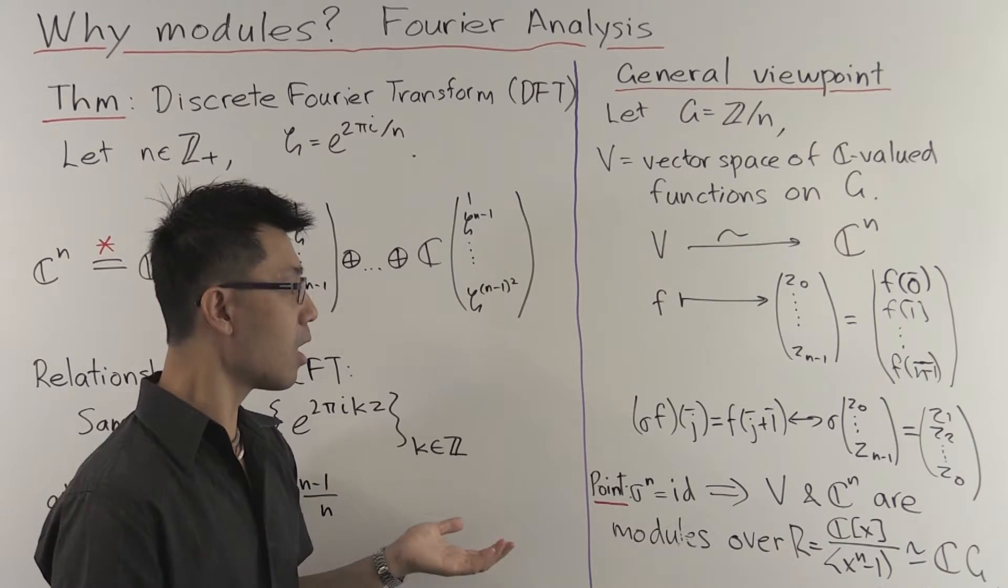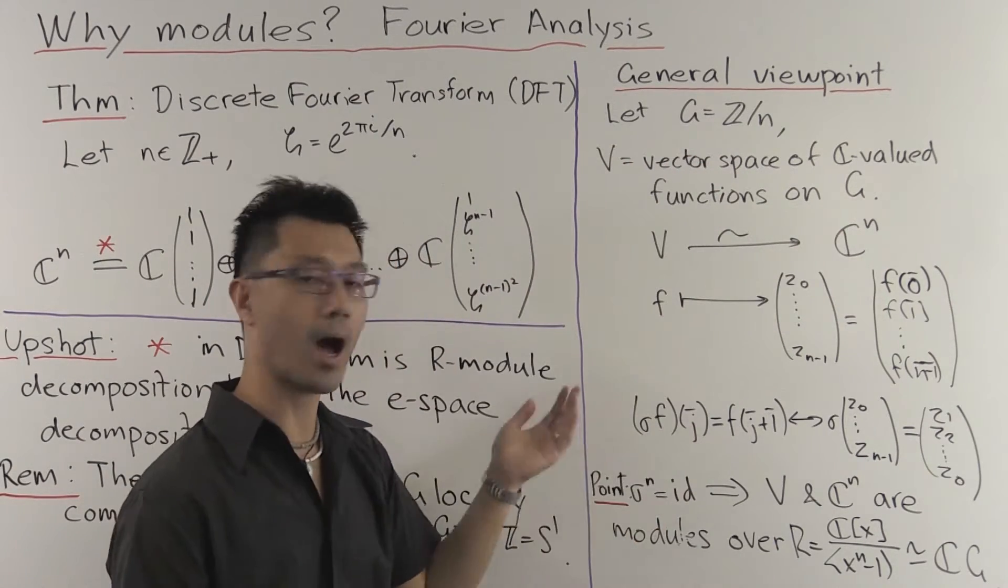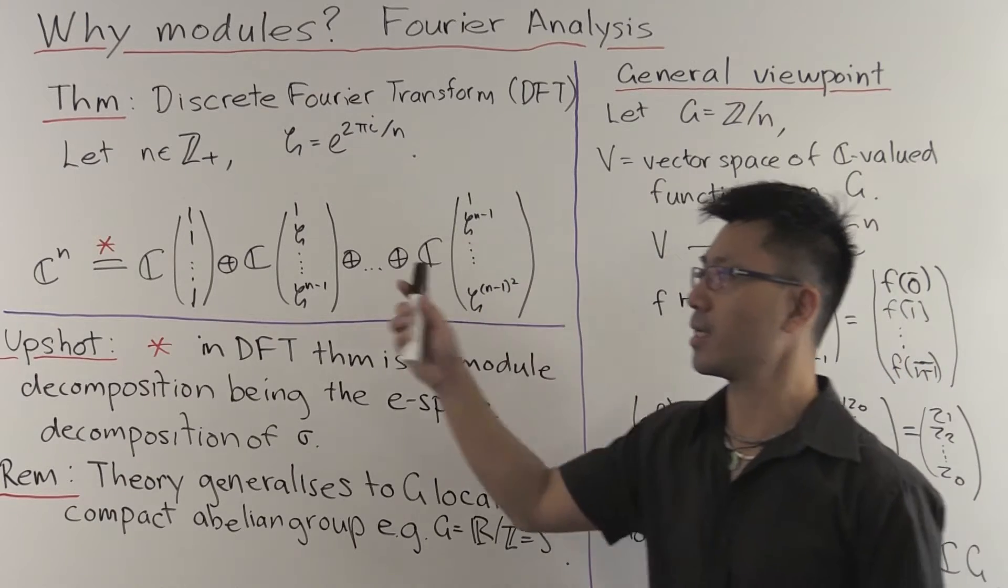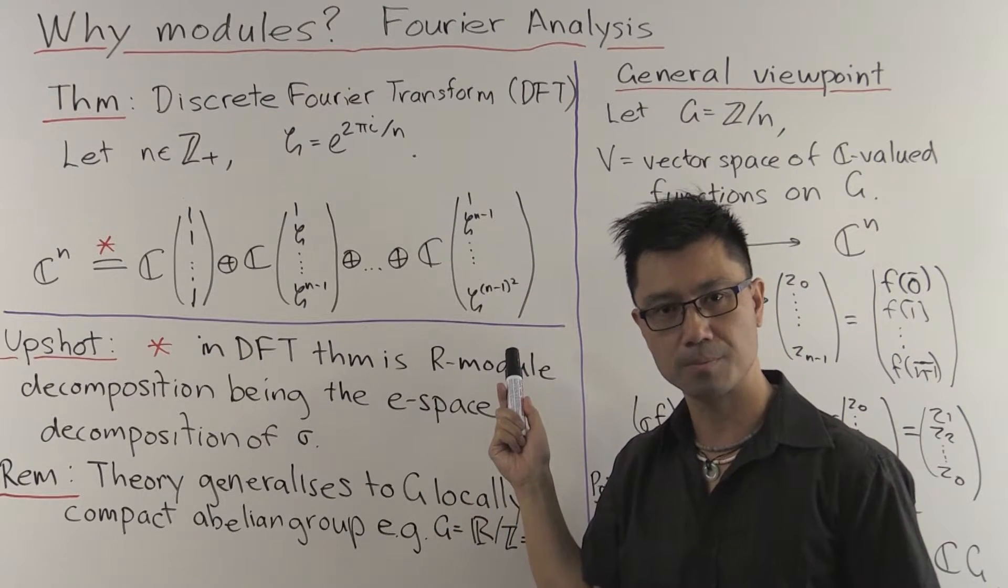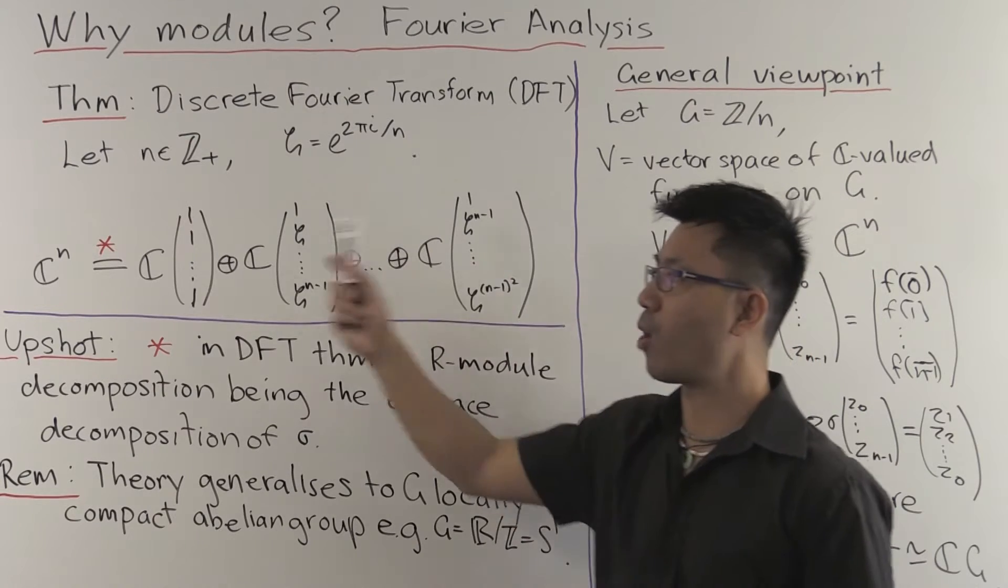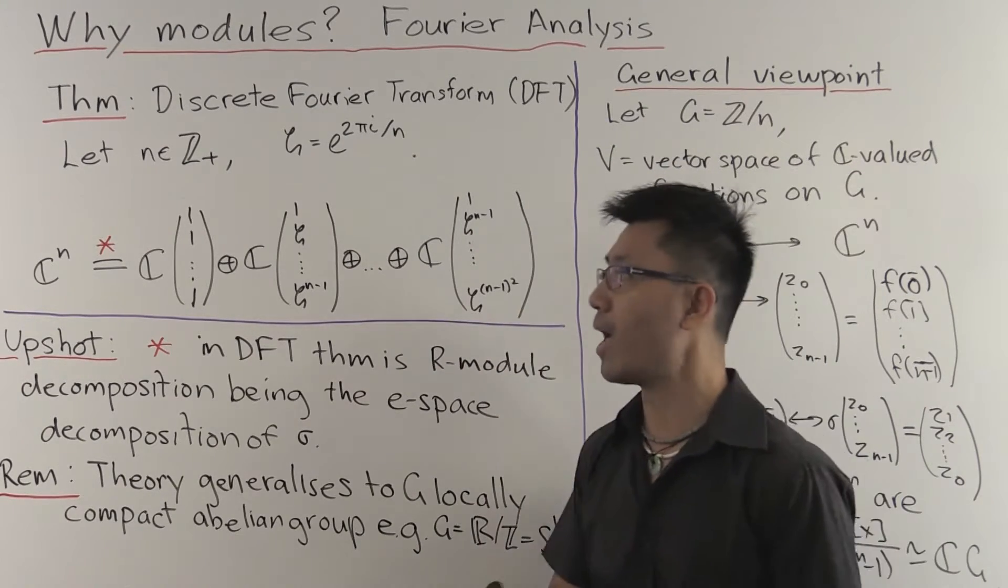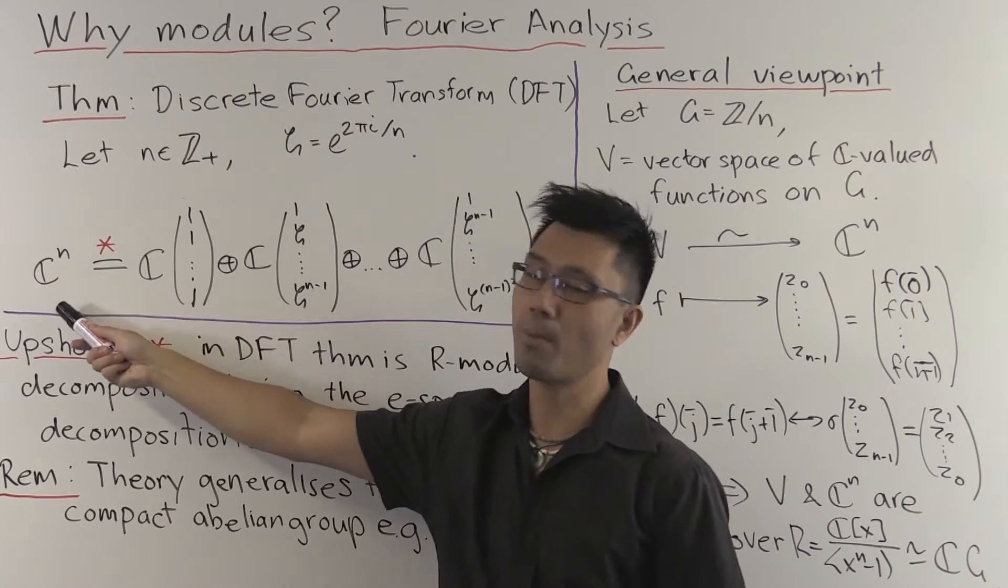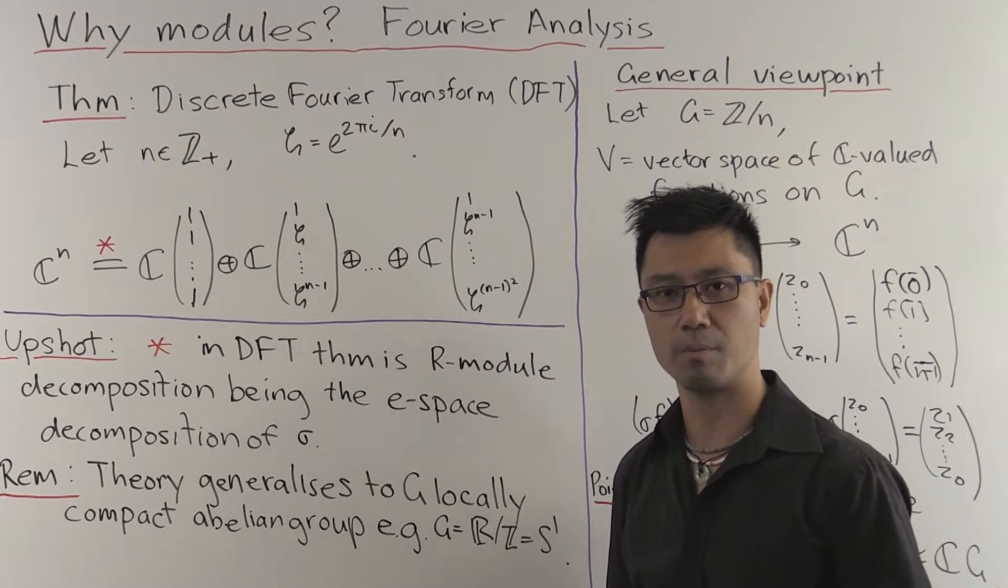So how can we use this module structure? So we see here that V and C^n has this extra R-module structure. And what can we do with it? Well, the point I want to make here is that there are lots of ways you can compose this C^n as a direct sum of one-dimensional vector spaces. They correspond to bases. But using the R-module structure, you can say why this is a good decomposition. It's the one which is most compatible with the symmetry that's involved here.